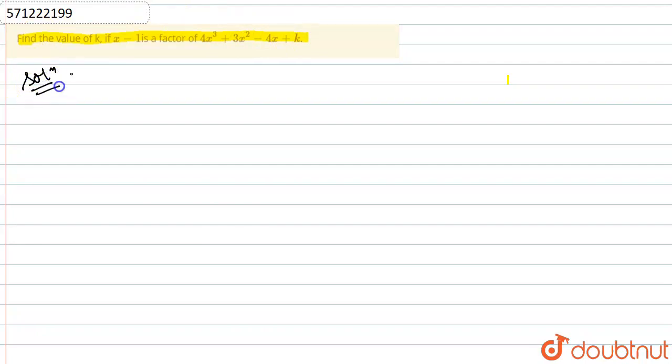Let's say we're given the polynomial p(x) equals 4x cube plus 3x square minus 4x plus k. It's given that x minus 1 is a factor of this polynomial.